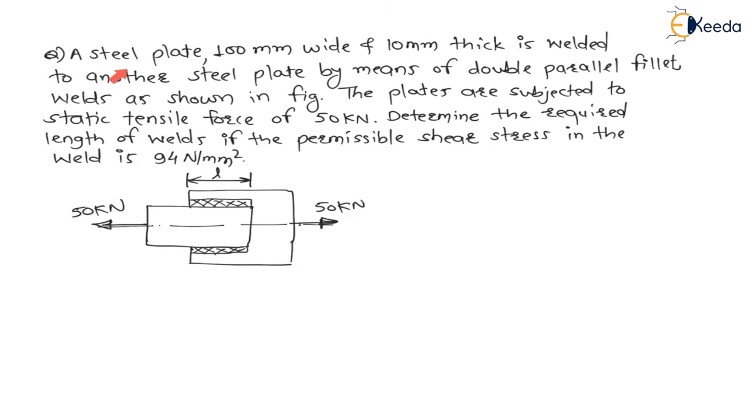The question is: a steel plate 100 mm wide and 10 mm thickness is welded to another steel plate by means of double parallel fillet weld as shown in figure. Here thickness of plate is given 10 mm, which we say as thickness S is equal to 10 mm. This is a double parallel fillet weld. See here there is welding of length L and here there is welding of length L.